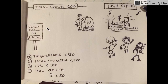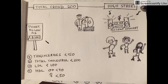The total crowd of 200 represents the total cholesterol level — not more than 200 mg/dL. The ticket price as low as $100 represents LDL — not more than 100 mg/dL.